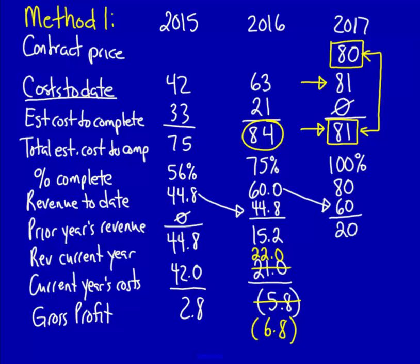Current year's costs are $18. Gross profit is $2. Even though we now have a profit, because we adjusted the numbers in the past and because we still have a loss position of $1, we have to continue to check the adjustment every single year. Therefore, we have to use the step-by-step process to calculate the cumulative loss.